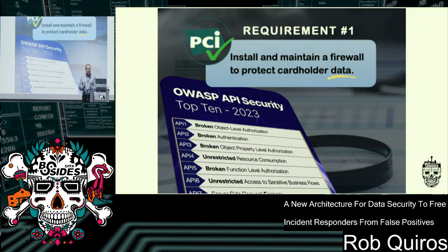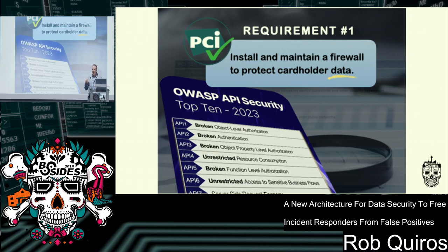We use firewalls and controls that we think are deterministic to protect data, when in fact we're failing because we're not actually protecting the data. The correlation between what we are protecting and the data itself is tenuous at best. If you go to the OWASP website, you'll see their top tens show that the top problems are broken access and broken authorization of data — bad people getting access to data they shouldn't.